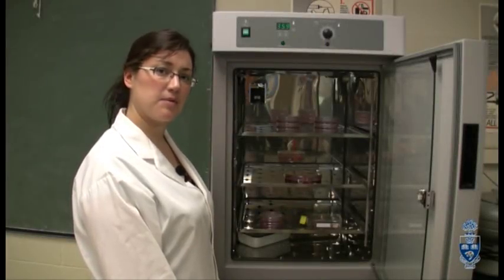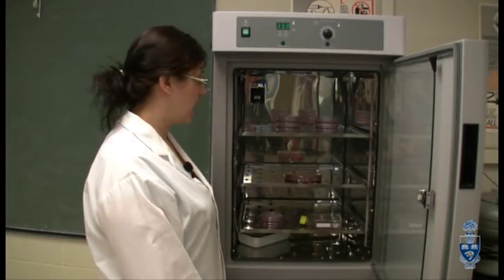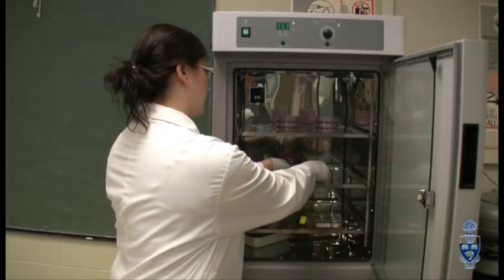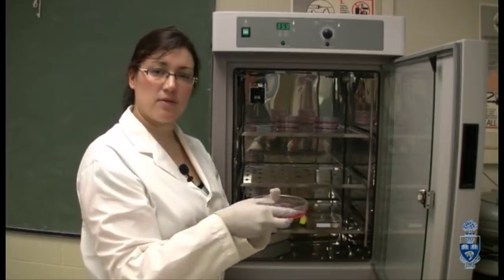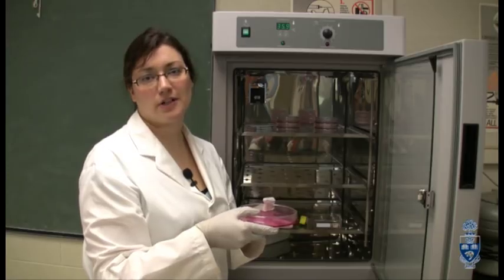As you can see, there are many cell types being cultured in this incubator. Our cells are the MCF7 cells. And now that we have them from the incubator, we can take them and passage them in the flow culture hood.